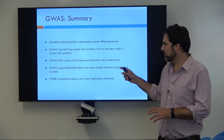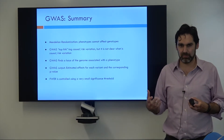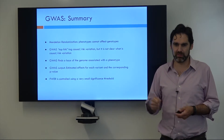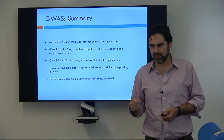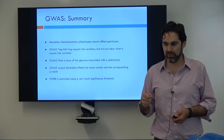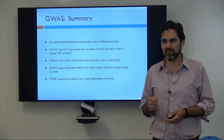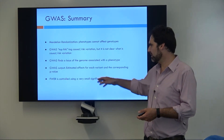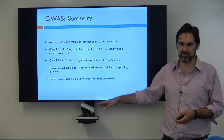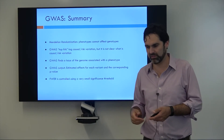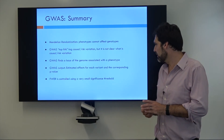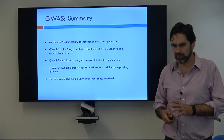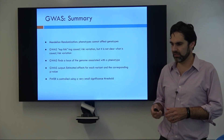So GWAS finds loci in the genome associated with phenotypes. When we do GWAS, we get estimated effects for each variant as well as their corresponding p-values. Thanks to changes in how we do GWAS, almost all GWAS results are now publicly available — you can download lists of effect sizes and p-values for most studies you want to look at. And we can control the family-wise error rate by using that really stringent significance threshold.